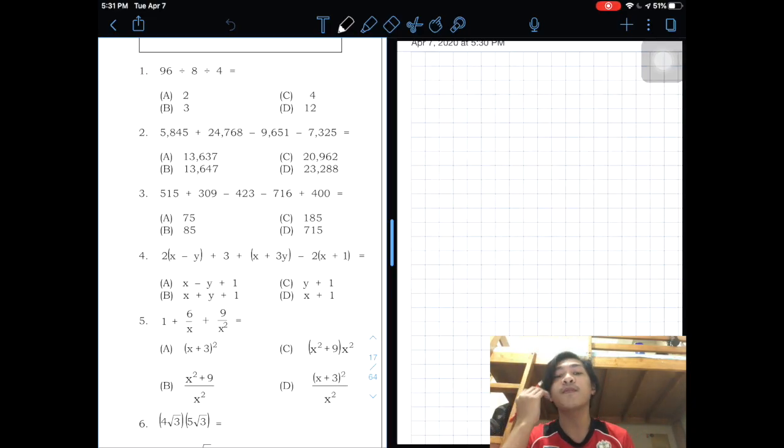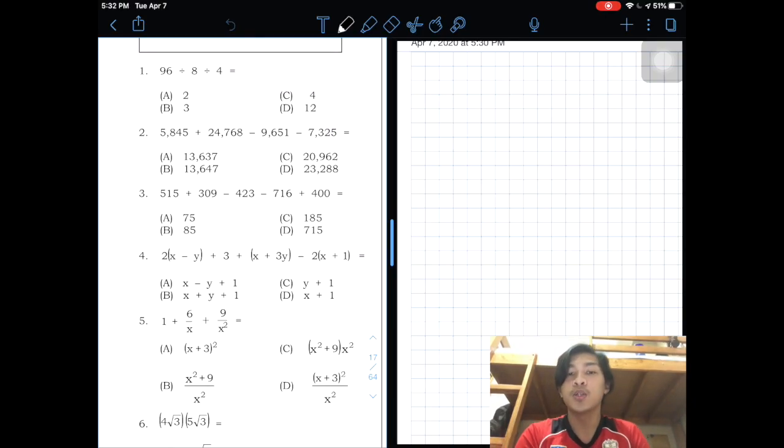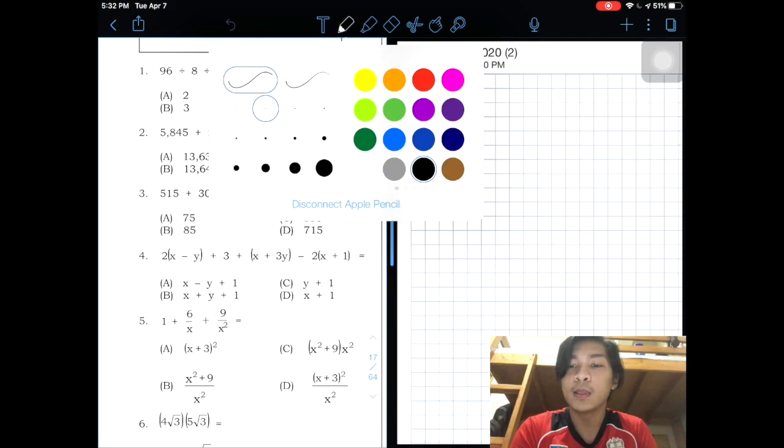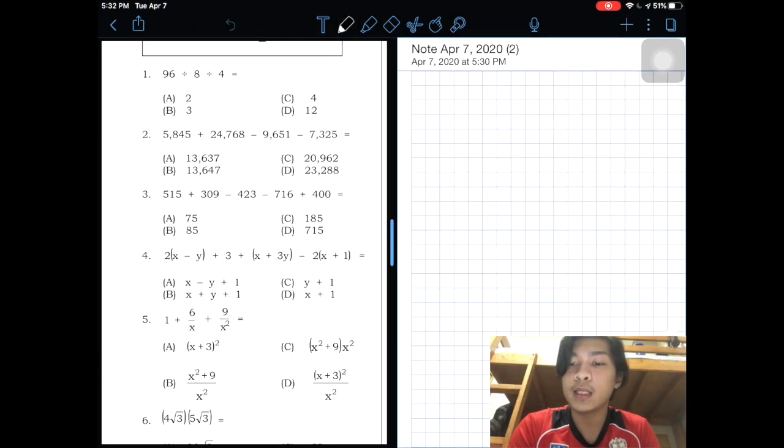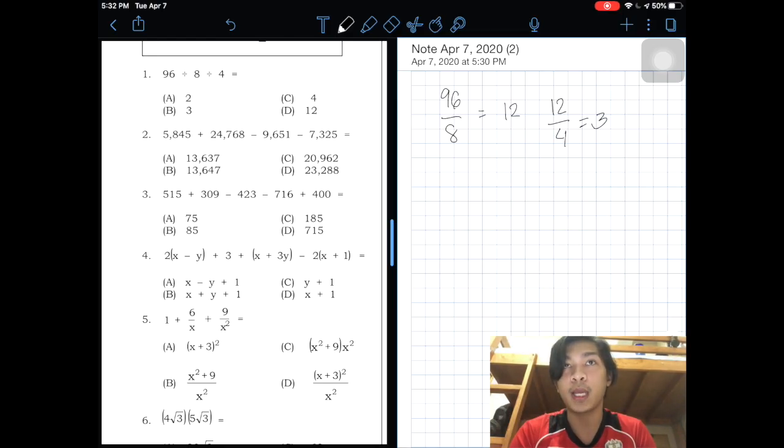For number 1, it's 96 divided by 8 divided by 4. As you can see, this is easy. Divide it from left to right. So it is 96 divided by 8. The answer is 12. Further division, which is 12 divided by 4, equals 3. So the answer is B.